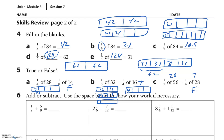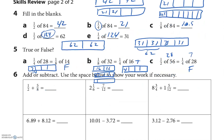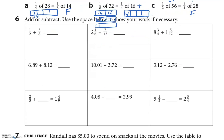One half plus five eighths: I know one half is four eighths, and four eighths plus five eighths equals nine eighths, which is the same as one whole and one eighth. Two and one sixth minus seven twelfths: let's change that to two and two twelfths minus seven twelfths.